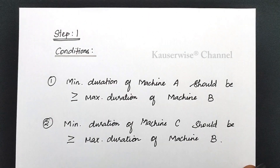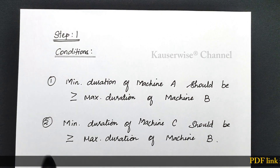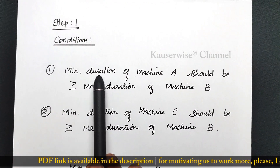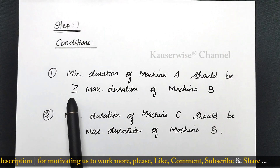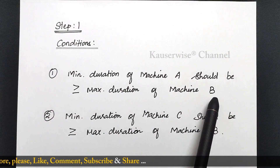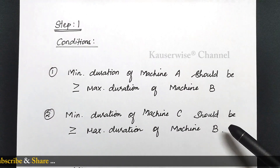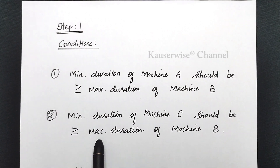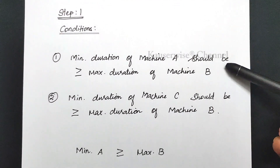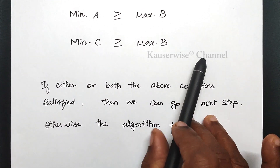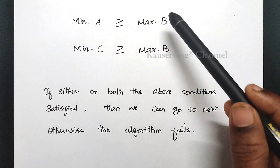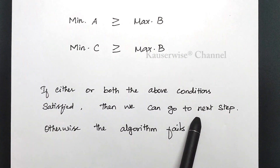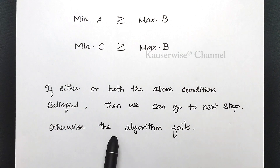Now see the solution. In order to solve the problem, first we need to check the condition. The first step has 2 important conditions. Condition number 1: minimum duration of machine A should be greater than or equal to maximum duration of machine B. The second condition: minimum duration of machine C should be greater than or equal to maximum duration of machine B. We need to satisfy either or both conditions to proceed further; otherwise the algorithm fails.